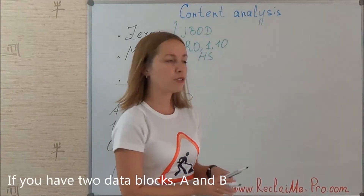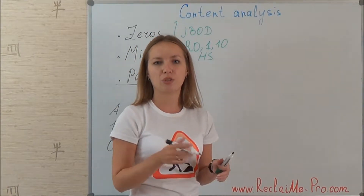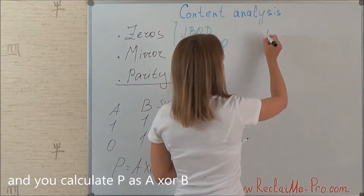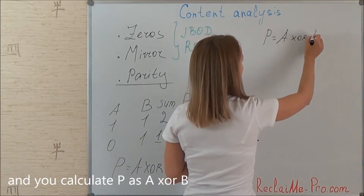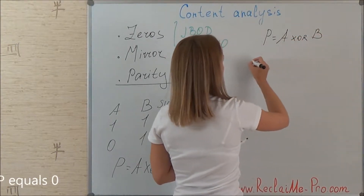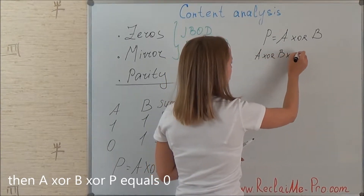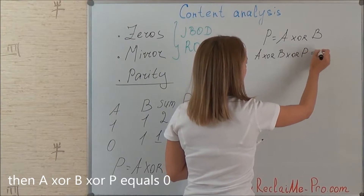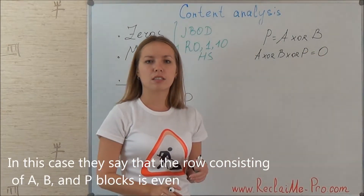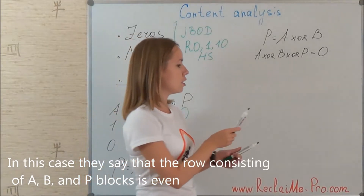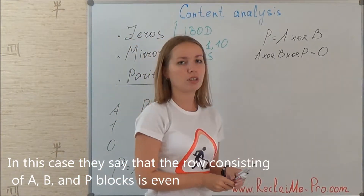Therefore P equals A XOR B. If you have two data blocks A and B and you calculate P as A XOR B, then A XOR B XOR P equals zero. In this case they say that the row consisting of A, B, and P blocks is even.